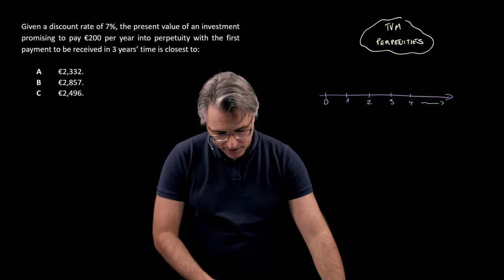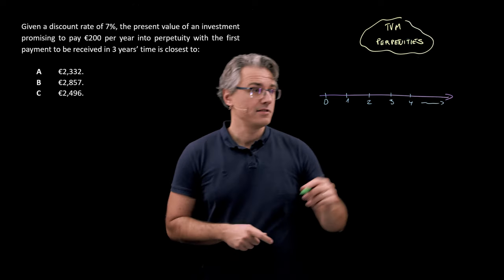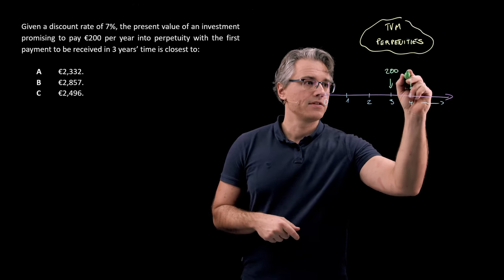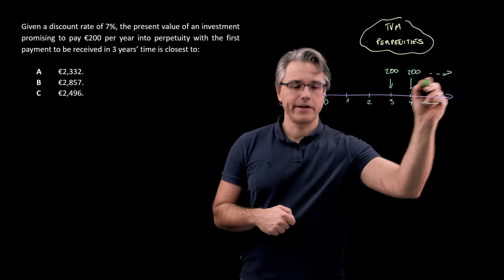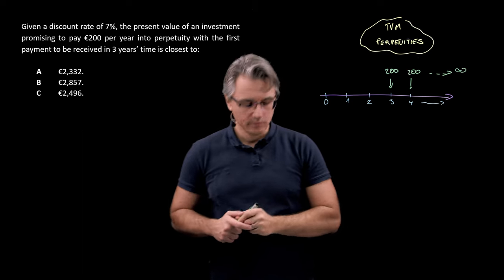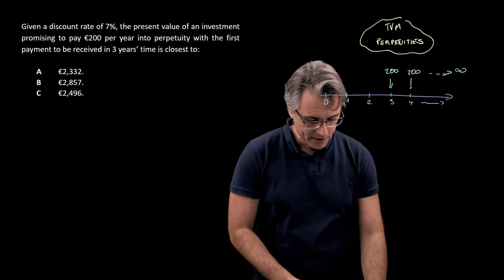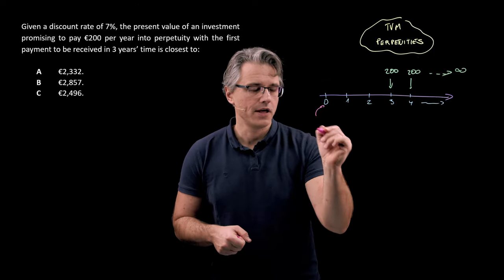What this question suggests is that starting in three years' time, we're going to be receiving equal payments of 200 per year forever into perpetuity. And we're asked for the PV at time zero, so today.